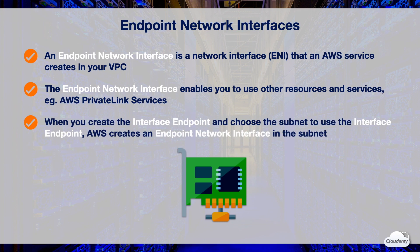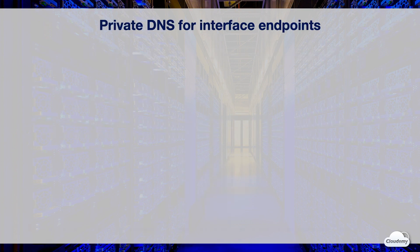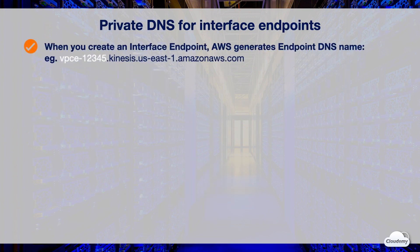The endpoint network interface has a private IP address from the IP address range of your subnet that serves as an entry point for traffic destined to a supported service. When you create an interface VPC endpoint, AWS generates endpoint-specific DNS hostnames that you can use to communicate with the service. The endpoint hostname starts with the VPC endpoint ID, service name, AWS Region, and amazon.aws.com.